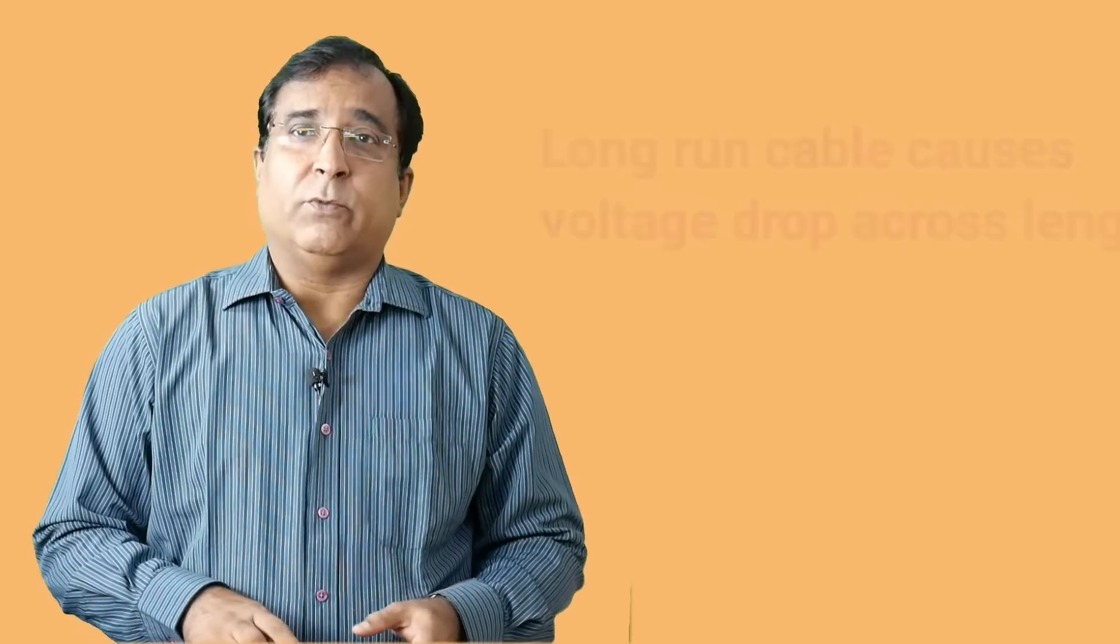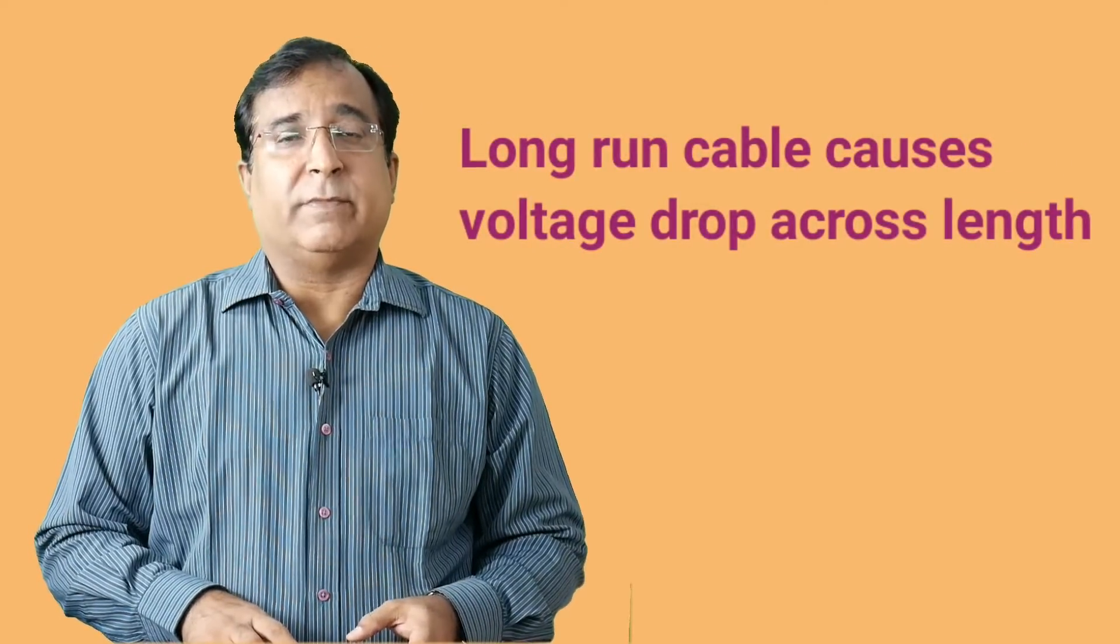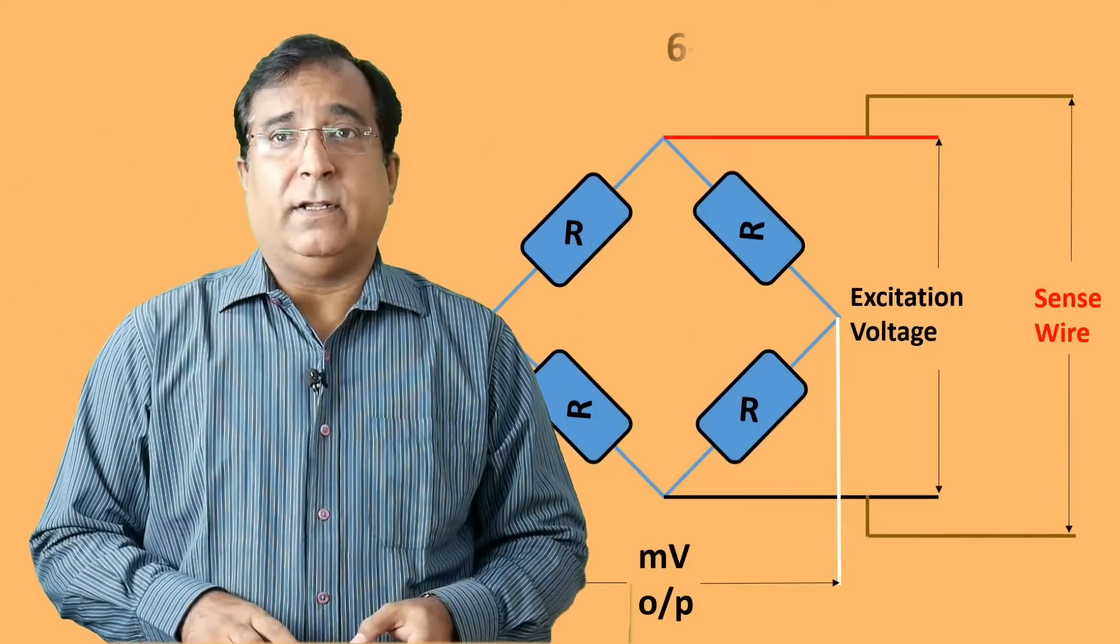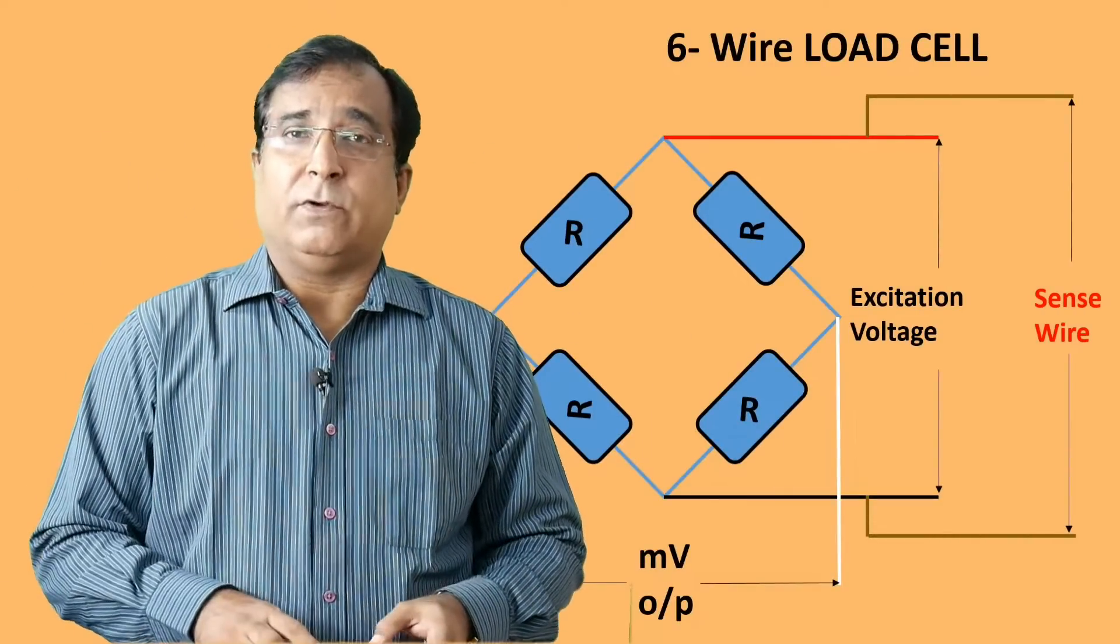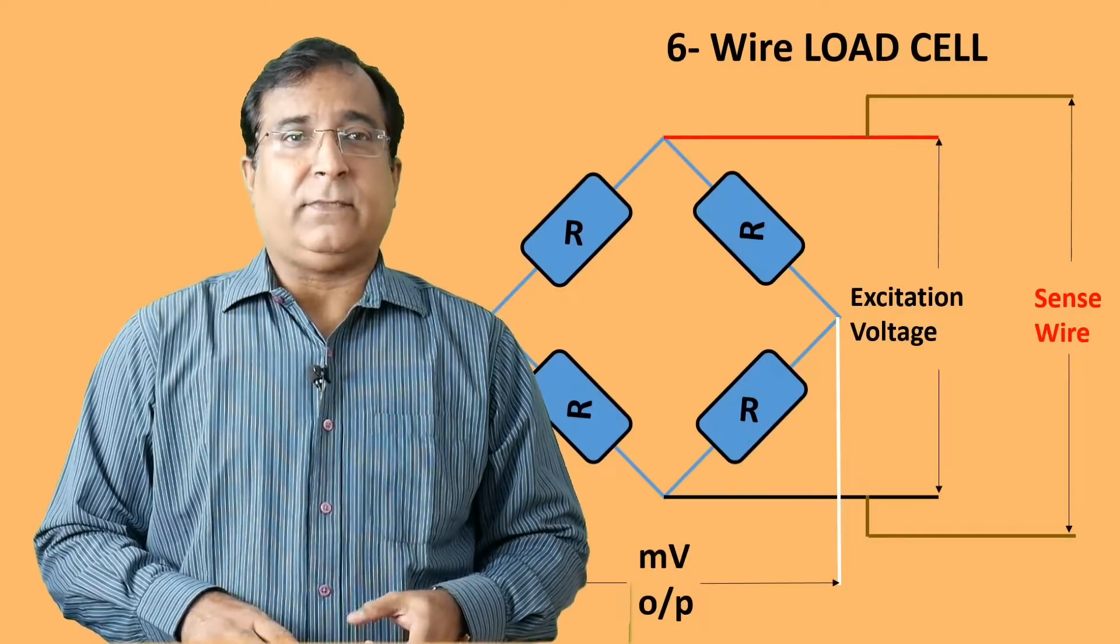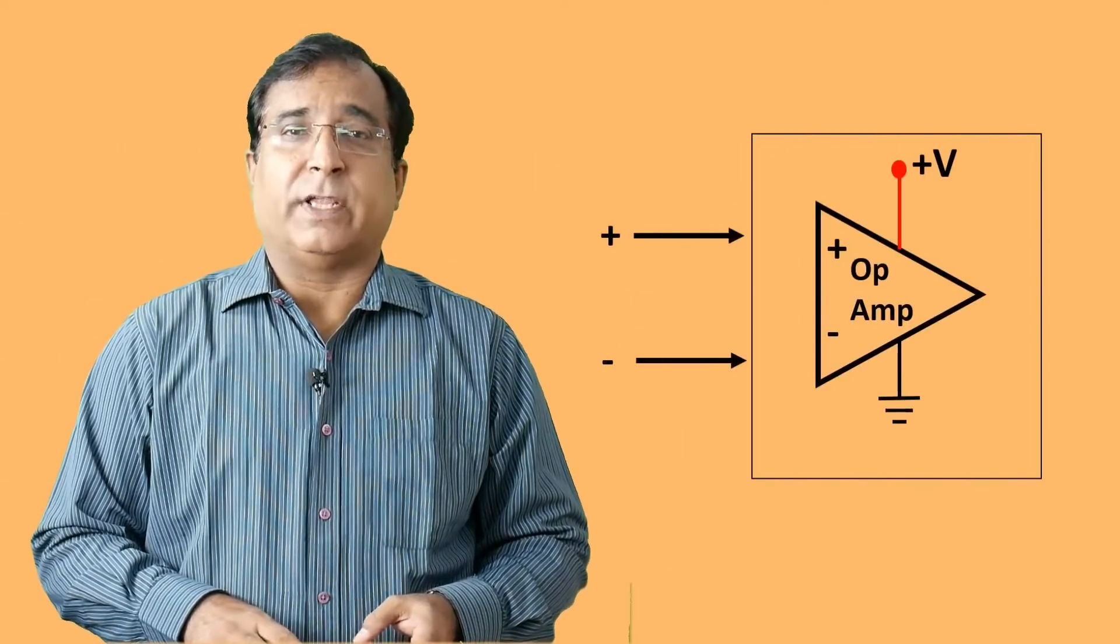But the cable length is supposed to be more due to remote measurement in the process plant. If a 4 wire load cell is used, then due to voltage drop the accuracy of weight will be compromised. That's why 6 wire load cell is used in remote measurement. In the same 4 wire load cell, 2 wires are extra added and which are connected parallel to the excitation supply wire. These are called sense wires. These 2 extra wires are meant for voltage drop compensation across cable length.